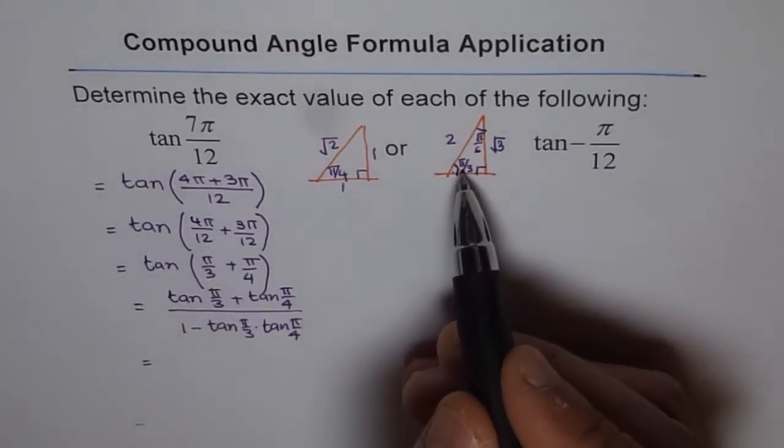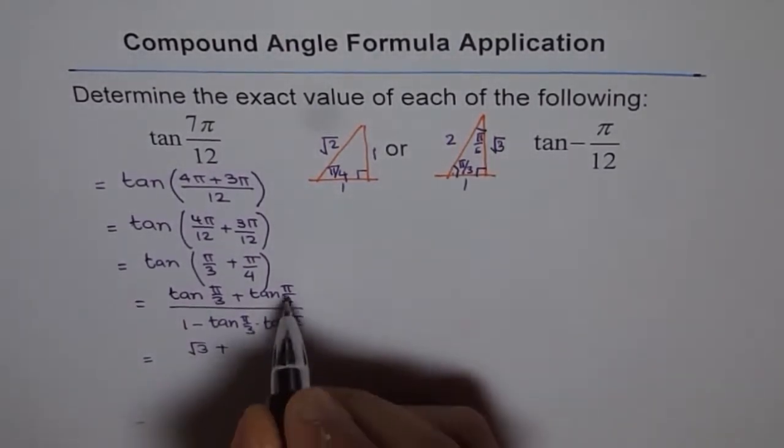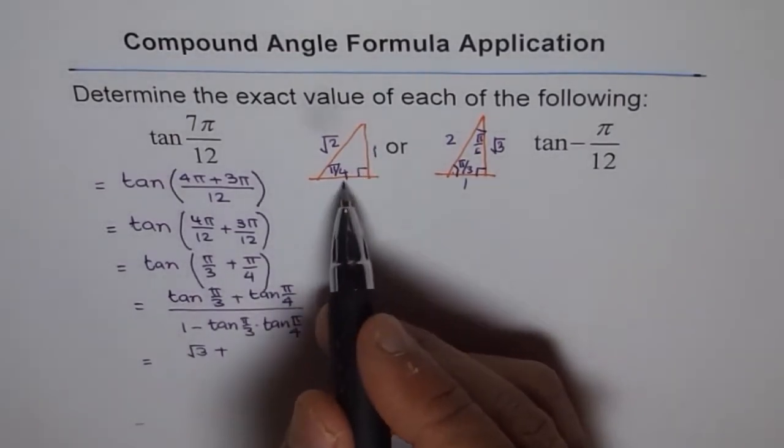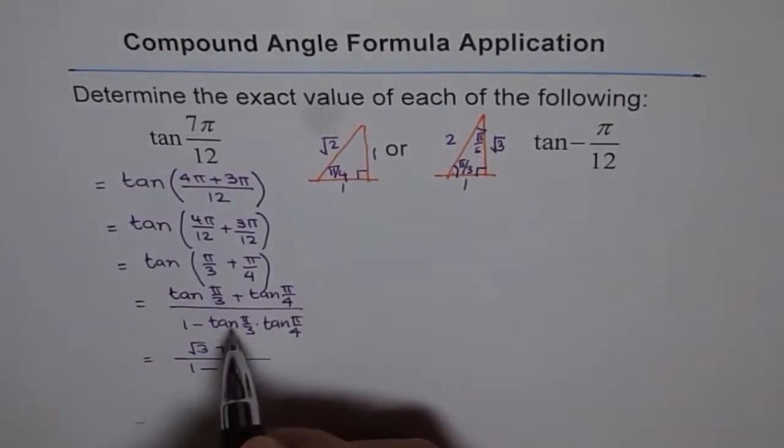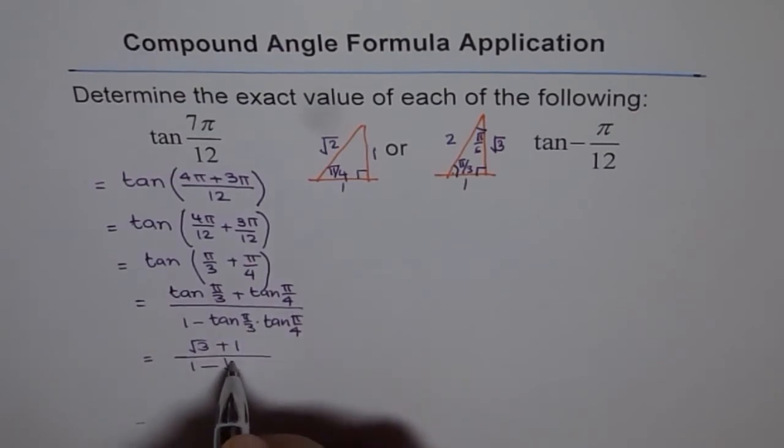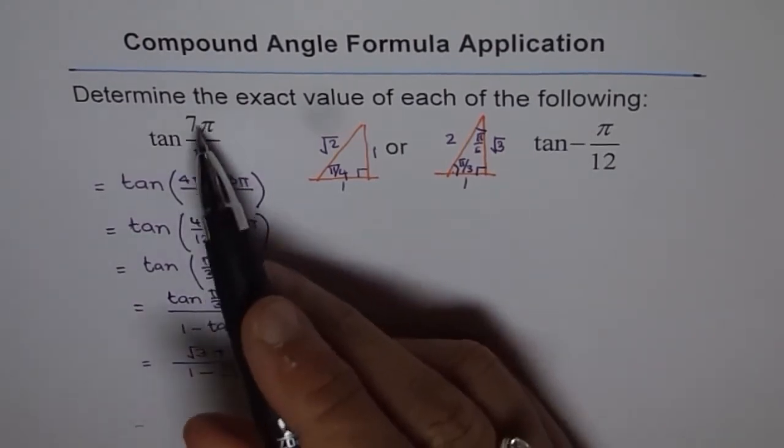But tan π/3, π/3 tan will be square root 3. So we get square root 3 plus, π/4 is 1. So 1 over 1 minus π/3 is square root 3 times 1. So that is our exact value for tan 7π/12.